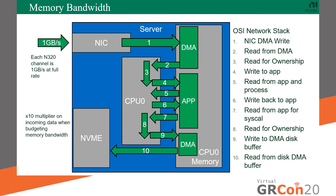When you start hitting higher channel counts with higher throughputs, even a high-performance server cannot meet the memory bandwidth requirements when using standard software architecture and system topology. Problems immediately start to jump out at you, and the more you dig, the more problems you find.